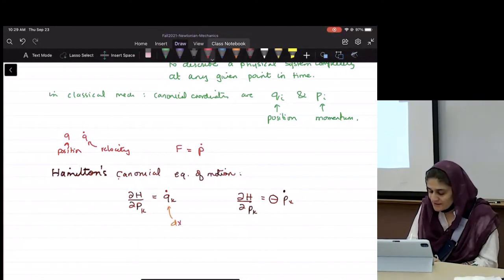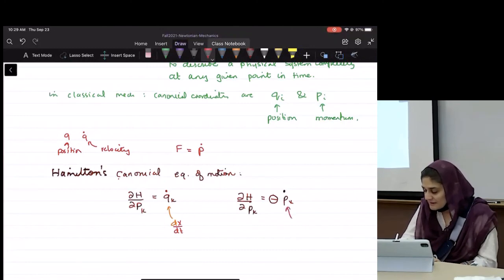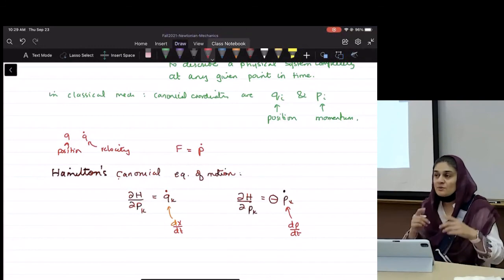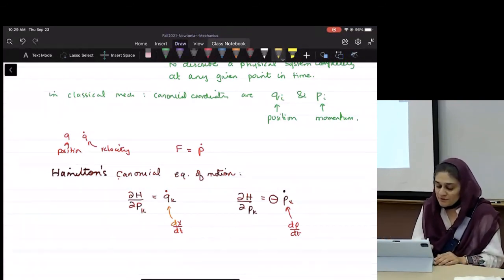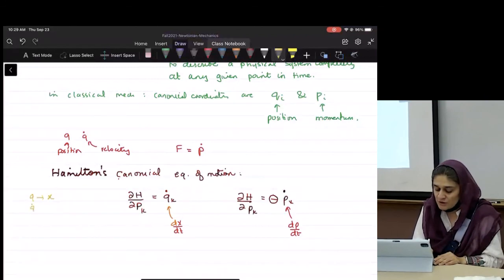Where we all know what this is. That's just dx over dt, right? And what is this? That is dp over dt. So when you look at this, I want you to think that q is nothing other than x, q dot is nothing other than v of x, and p is momentum, and p dot is dp over dt, which is also the force.